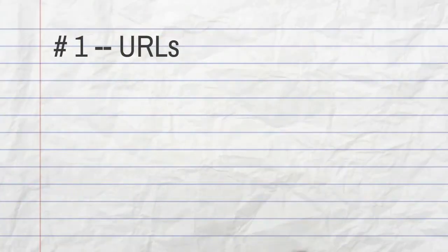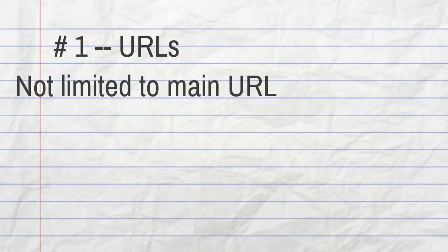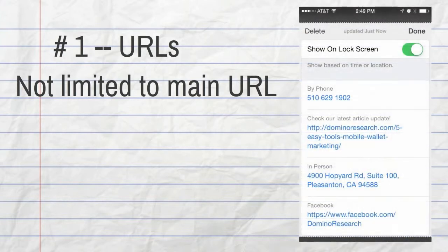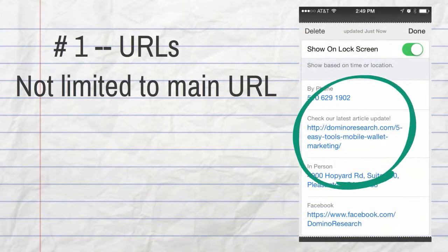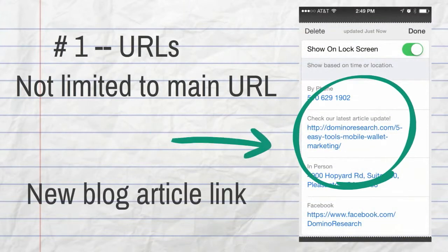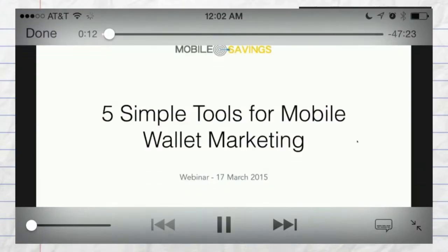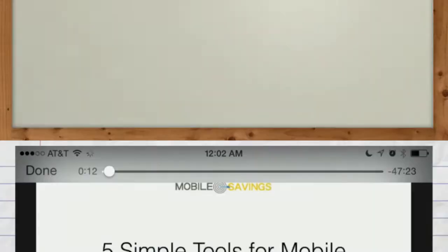Number one on my list: website URLs. Don't feel like you're limited to your main URL. I often point these links to new articles or how-to videos. The embedded videos launch right from the back of the card.